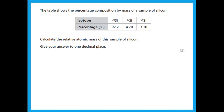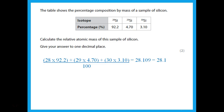Silicon has three isotopes with mass numbers 28, 29, and 30, each with given percentage occurrences. To calculate relative atomic mass: (28 × %occurrence + 29 × %occurrence + 30 × %occurrence) / 100. The calculator gives 28.109, but the question asks for one decimal place, so the final answer is 28.1. Always round to the number of decimal places or significant figures requested, or you will lose a mark.